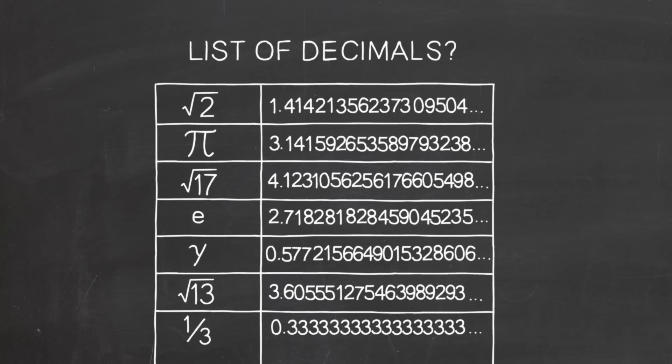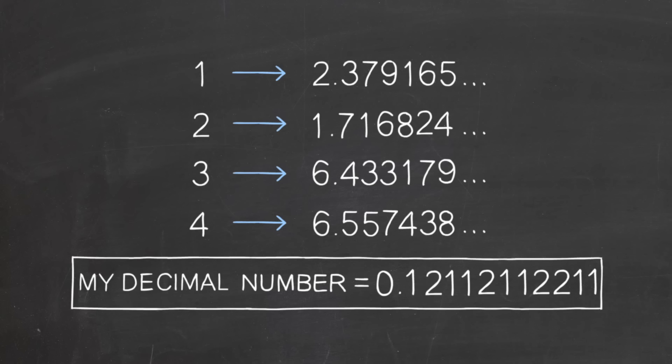Look, suppose you claim you have made a list of all the decimals. I'm going to show you that you didn't succeed by producing a decimal that's not on your list. I'll construct my decimal one place at a time. For the first decimal place of my number, I'll look at the first decimal place of your first number. If it's a one, I'll make mine a two. Otherwise, I'll make mine a one.